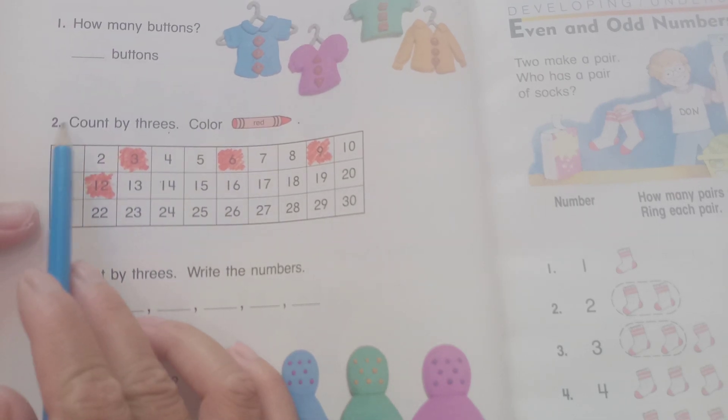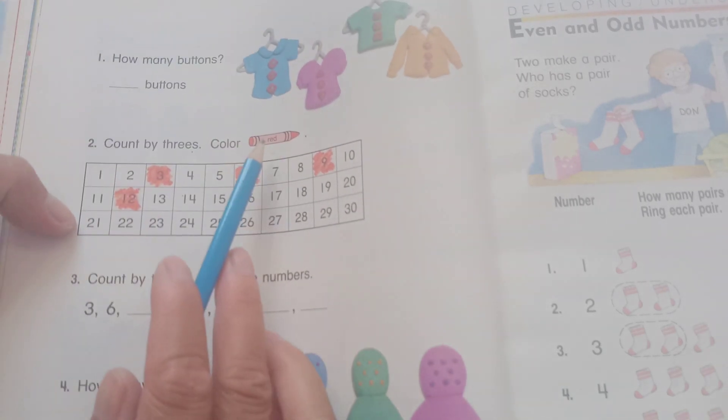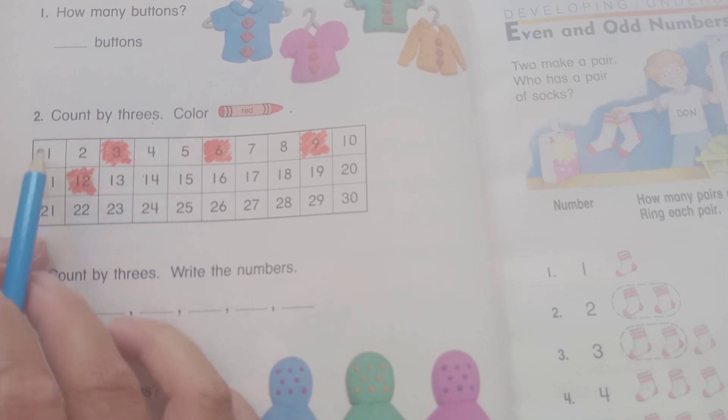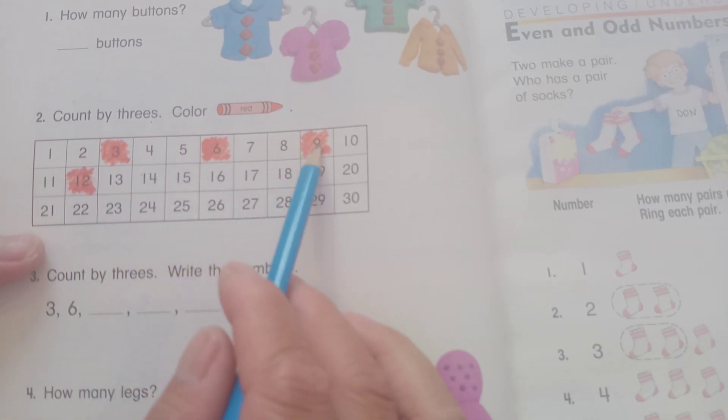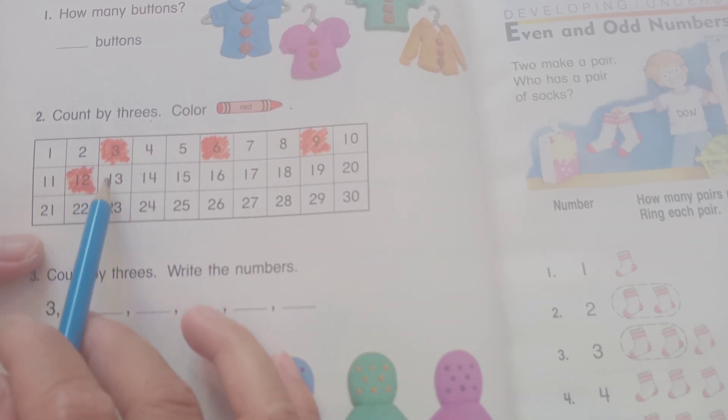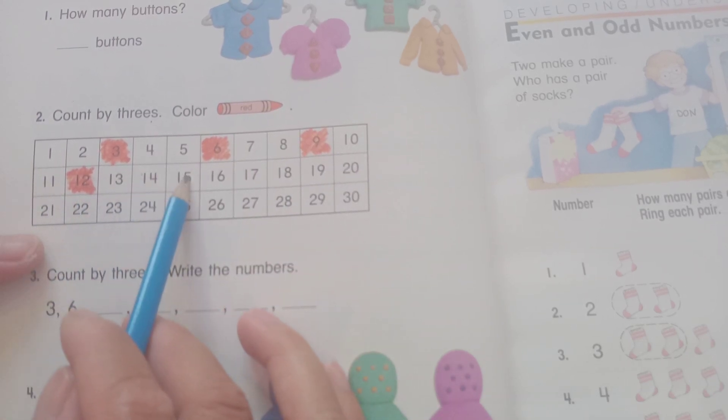You can count by three, color red. So one, two, three. Four, five, six. Seven, eight, nine. Ten, eleven, twelve. Continuing: three, six, nine.